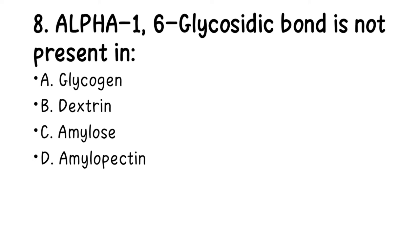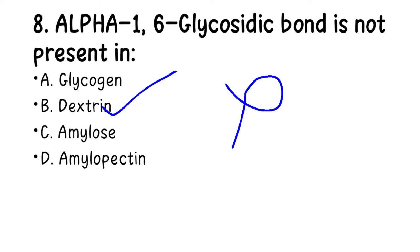Number 8. Alpha-1,4 glycosidic bond is NOT present in: A. Glycogen, B. Dextrin, C. Amylose, D. Amylopectin. The right answer here is B, Dextrin.